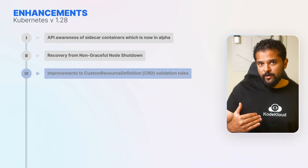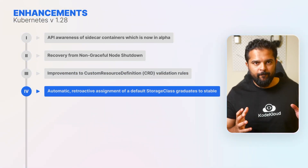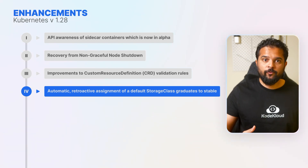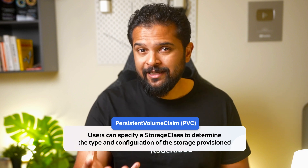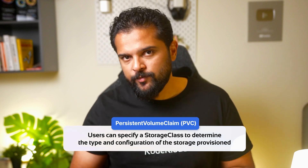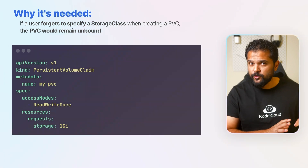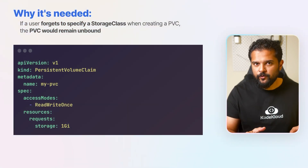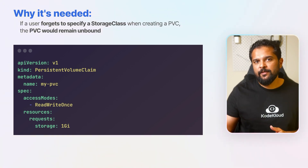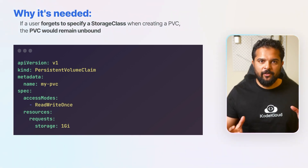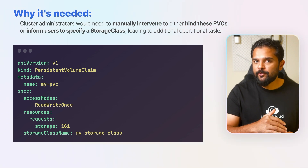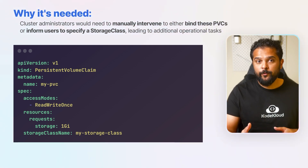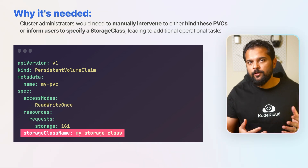The fourth item is automatic retroactive assignment of a default storage class, which has graduated to stable. In Kubernetes, when users create a persistent volume claim or PVC to request storage, they can specify a storage class to determine the type and configuration of the storage provisioned. Not all users are aware of this or may forget to specify a storage class, and without a default mechanism in place, these PVCs would remain unbound, leading to potential confusion and operational overhead. Cluster administrators would need to manually intervene to either bind these PVCs or inform users to specify a storage class.